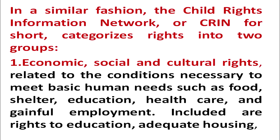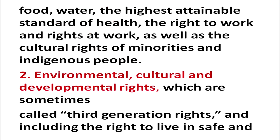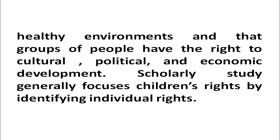The Child Rights Information Network (CRIN) categorises rights into two groups. First, economic, social, and cultural rights related to the conditions necessary to meet basic human needs such as food, shelter, education, health care, and gainful employment — including rights to adequate housing, food, water, standard of health, right to work, and cultural rights of minorities and indigenous people. Second, environmental, cultural, and developmental rights, called third-generation rights, including the right to live in safe and healthy environments, and the right of groups to cultural, political, and social development.